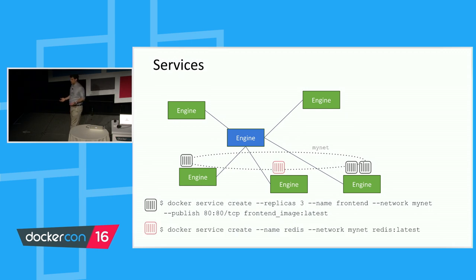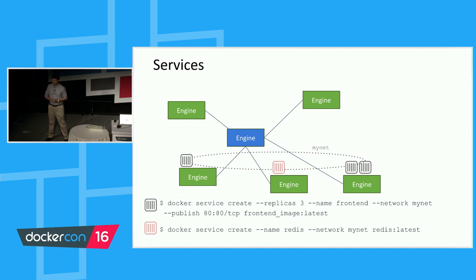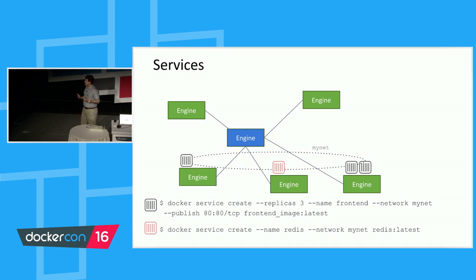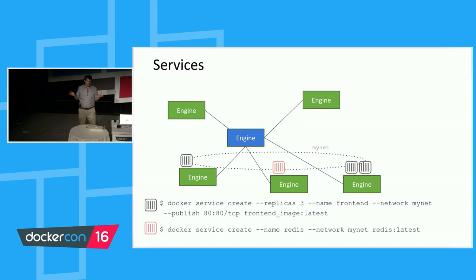You can add a second service — for example a Redis service — using the same process: 'docker service create', declare the name, the network, and the image 'redis:latest'. Now all containers can communicate on the overlay network via assigned private IPs. We also have DNS-based service discovery, so application code in your frontend service can just say 'connect to redis' as a hostname and it will find the Redis container on that overlay network.